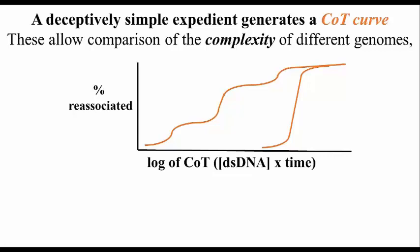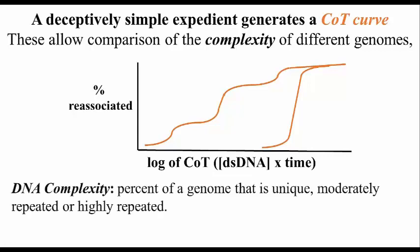So-called CoT curves reveal the complexity of a genome. Genomic complexity is defined as the proportion of a genome that is unique, moderately repeated, or highly repeated.